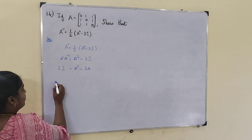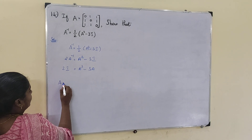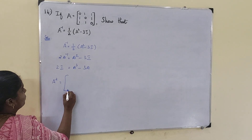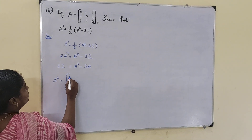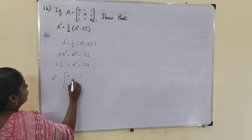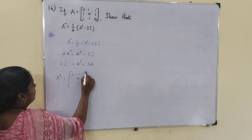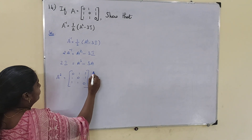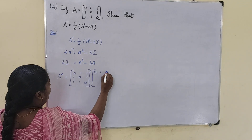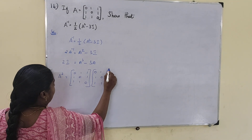First we have to find A cube, so we start by finding A square. A square equals A into A: [0,1,1; 1,0,1; 1,1,0] into [0,1,1; 1,0,1; 1,1,0].